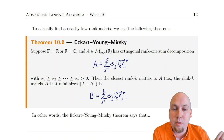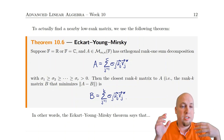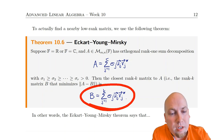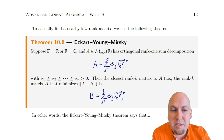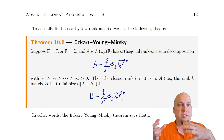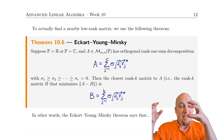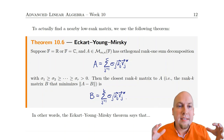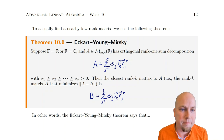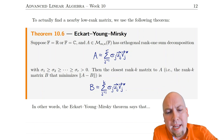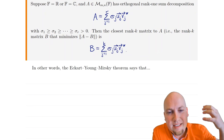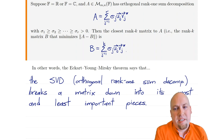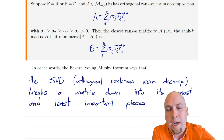So what you're doing with this truncated orthogonal rank-one sum is just taking the K terms corresponding to the K largest singular values of A, and throwing away all terms corresponding to the small singular values. One way of looking at the Eckart-Young-Mirsky theorem is that the singular value decomposition organizes the matrix into its most and least important pieces.